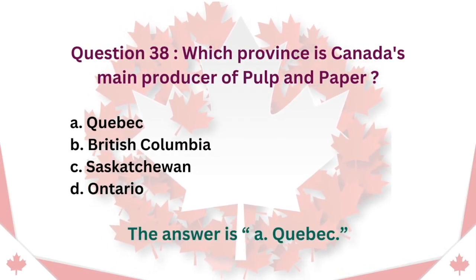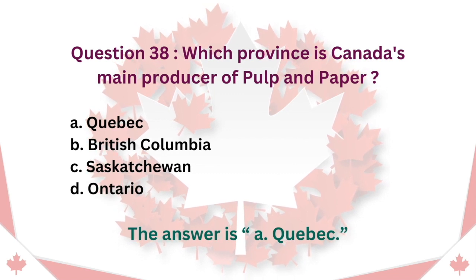Question 38: Which province is Canada's main producer of pulp and paper? A. Quebec. B. British Columbia. C. Saskatchewan. D. Ontario. The answer is A. Quebec.